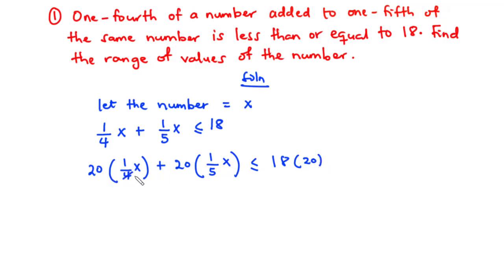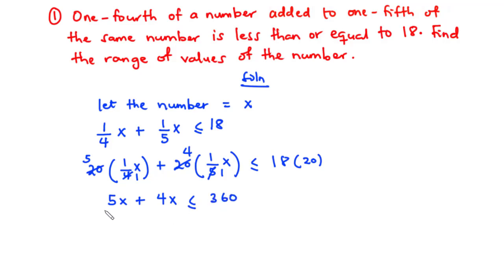4 goes into 20 five times, so we get 5x. 5 goes into 20 four times, so we get plus 4x, and that is less than or equal to 18 times 20, which is 360. Adding like terms: 5x plus 4x is 9x, less than or equal to 360. Dividing through by 9 gives x is less than or equal to 40.